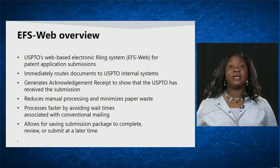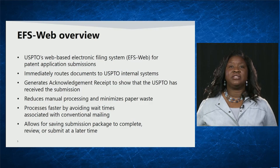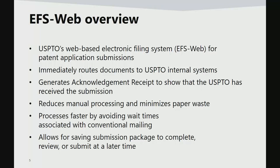Here is an overview of EFS web. EFS web allows applicants to submit patent applications electronically. The benefit of filing electronically is that it immediately routes documents to USPTO internal systems. After applicants submit, the system will generate an acknowledgement to show that the USPTO has received the submission. Additional benefits include reducing manual processing, minimizing paper waste, and processing faster by avoiding wait times associated with conventional mailing. It also allows applicants to save submissions on the USPTO server so that they can complete, review, or submit at a later time.